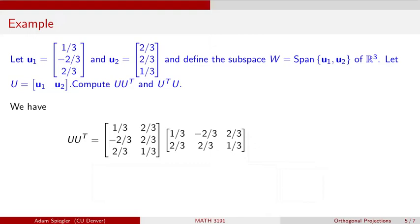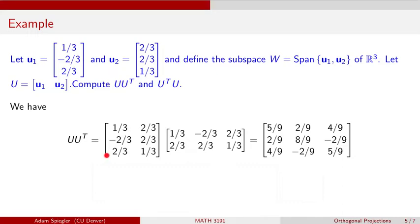When I take the product U·Uᵀ, out comes a 3×3 matrix, because U was 3×2 and Uᵀ was 2×3. You can check that the result has first column [5/9, 2/9, 4/9], second column [2/9, 8/9, -2/9], and third column [4/9, -2/9, 5/9].